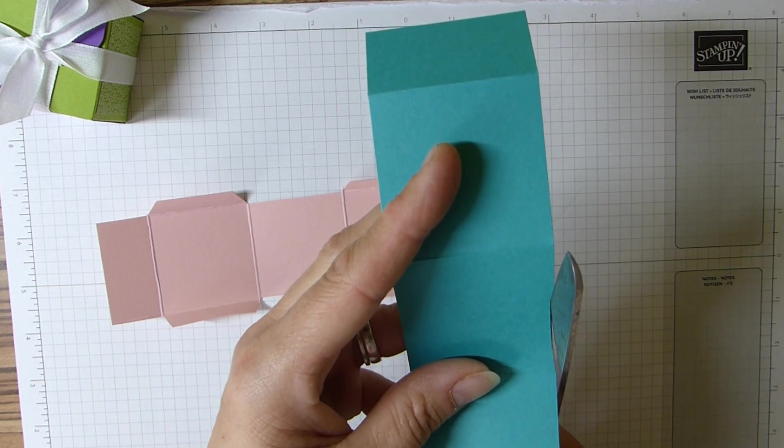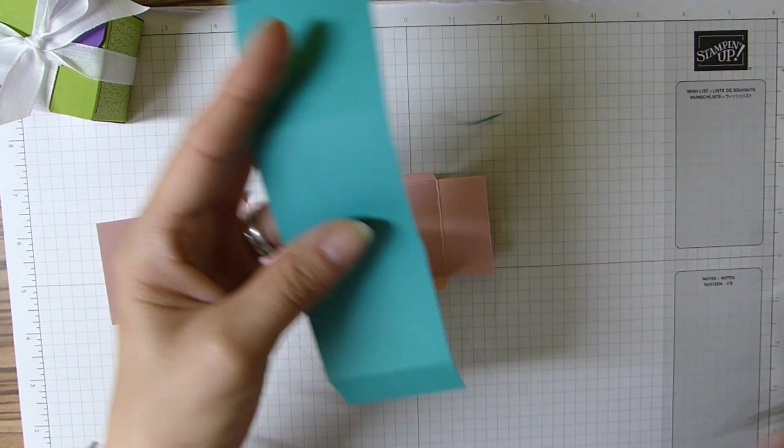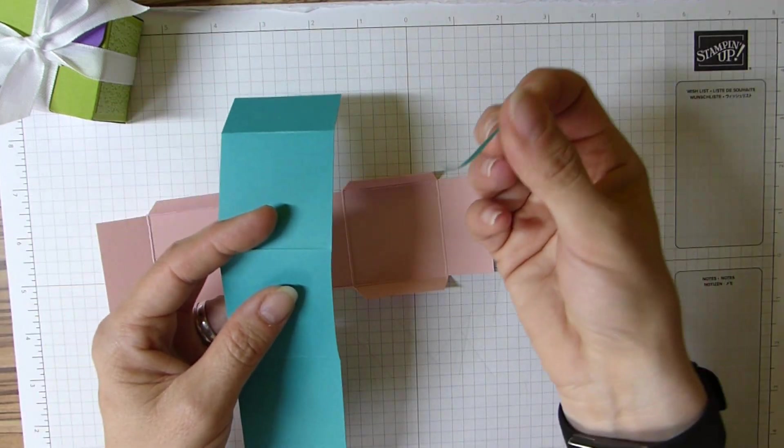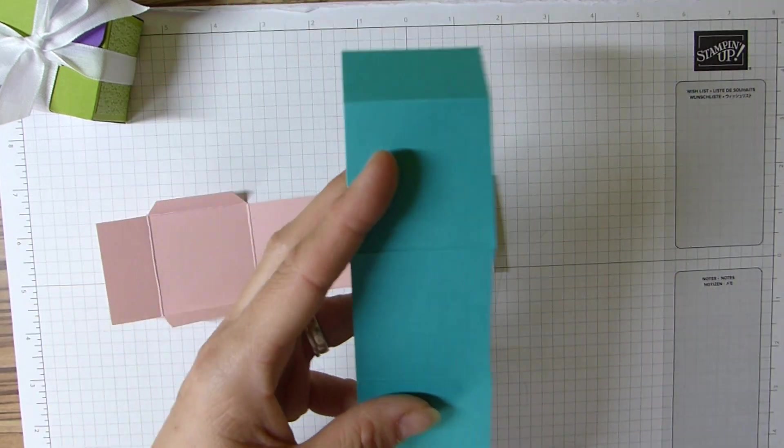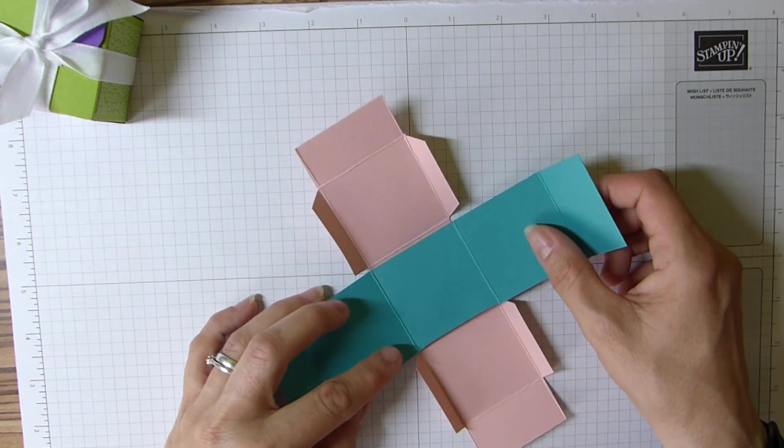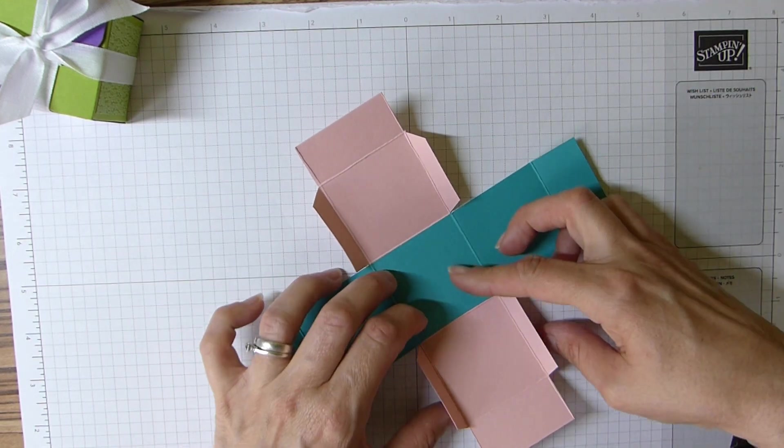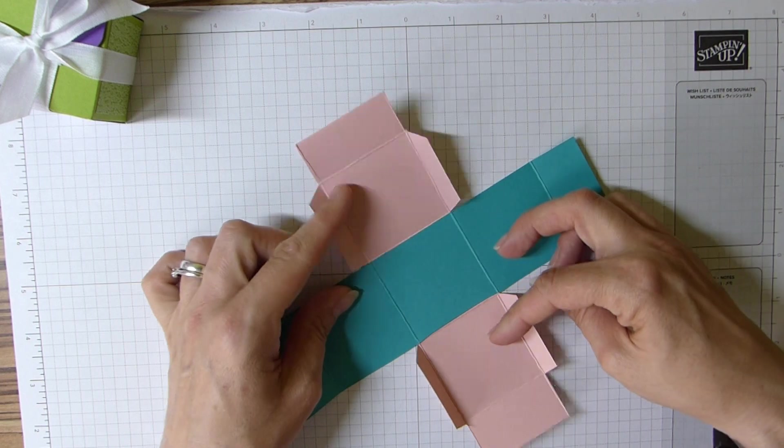So all I did was I got my scissors and I cut out of the middle square just a very thin sliver. Literally just a sliver. It's not noticeable because it's inside the box, but it will make it a lot easier when you come to fold it up.